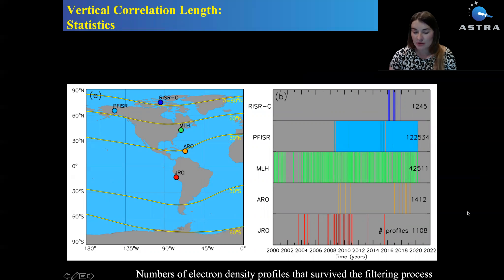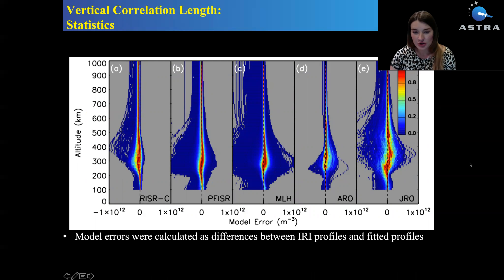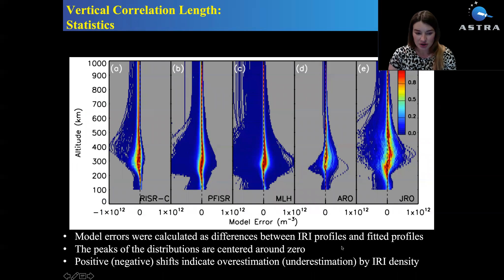That's how the distribution of model errors look like for each radar. You see that the peaks of the distributions are always centered somewhere around zero. The positive shift would indicate the overestimation by IRI density and the negative one, the underestimation. For example, for Jicamarca radar, somewhere above the NMF2 IRI density is overestimated by the model and below it's underestimated.